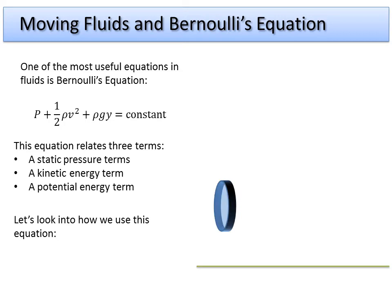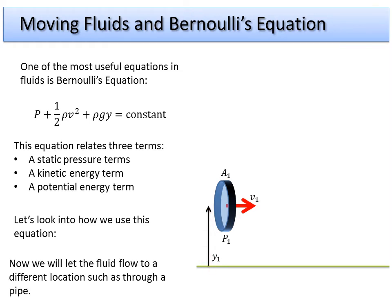Let's see how we use this equation. Say we start off with some fluid sitting at some height above the ground — this term is a conservation-of-energy derived value, so we look at its height above the ground to begin with. We let this fluid flow, so it has some static pressure P1, some initial velocity, and some initial height. We let it flow through a pipe, through an artery, through a vein, through a smokestack — whatever we let it flow through.